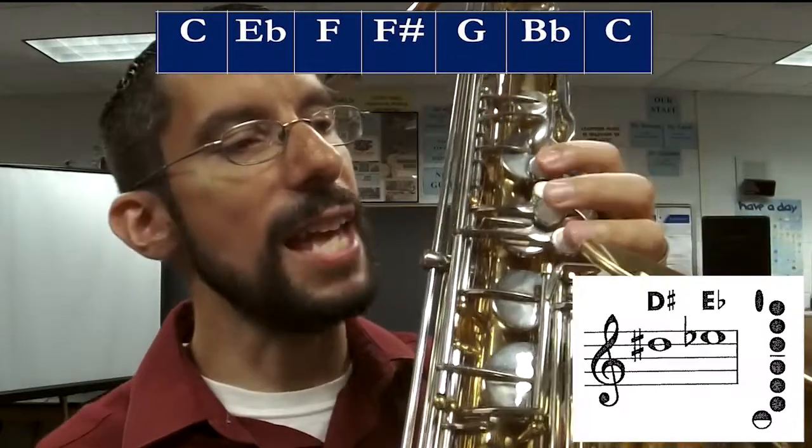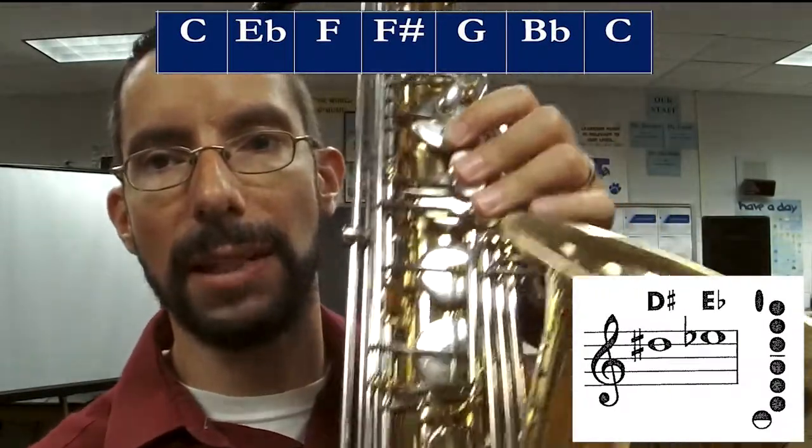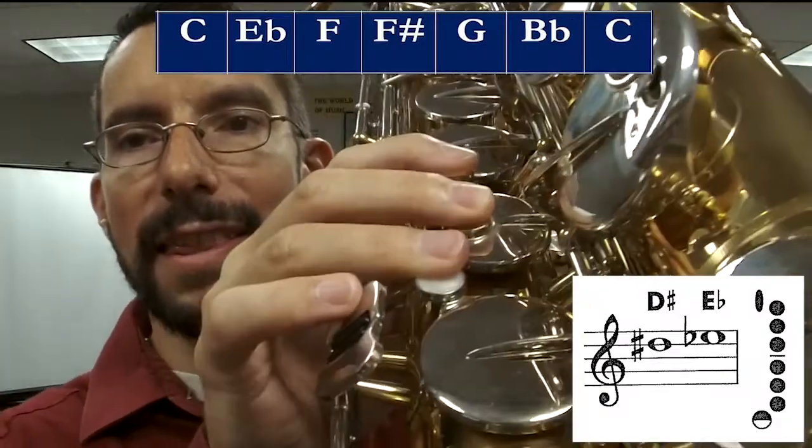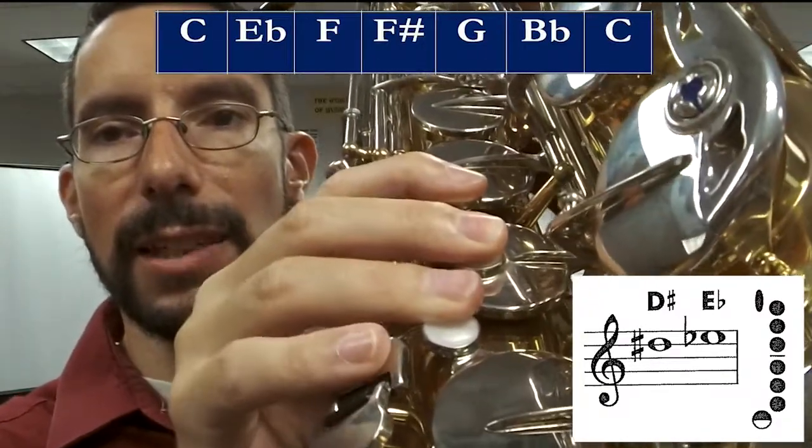Then we're going to do E flat, which is everything. Everything on the top, everything on the bottom, plus this silver key. So it's everything plus this octave key, E flat.